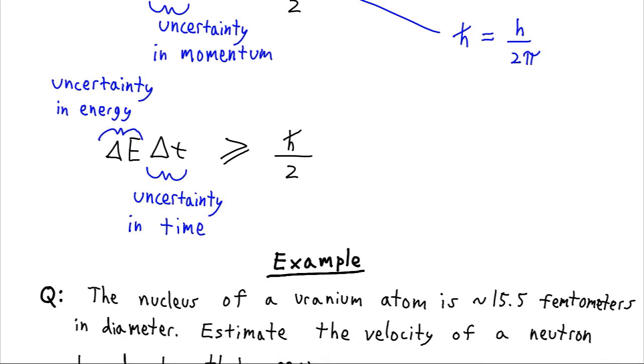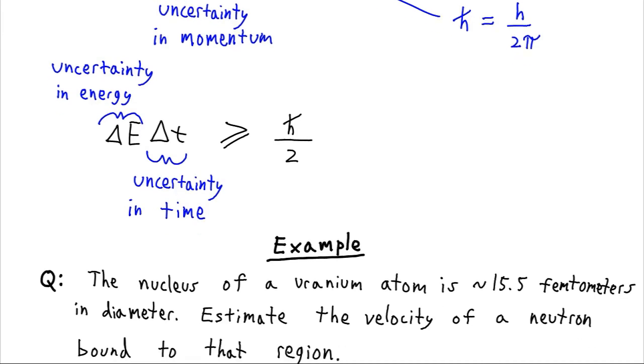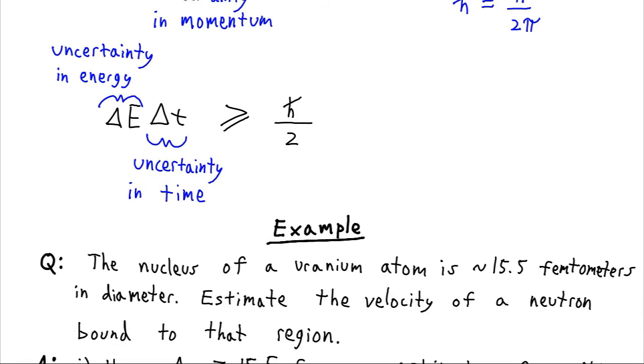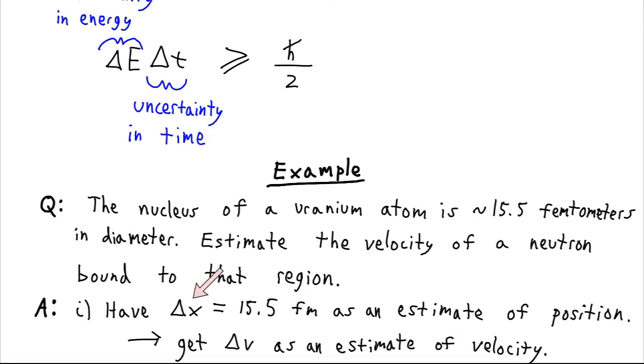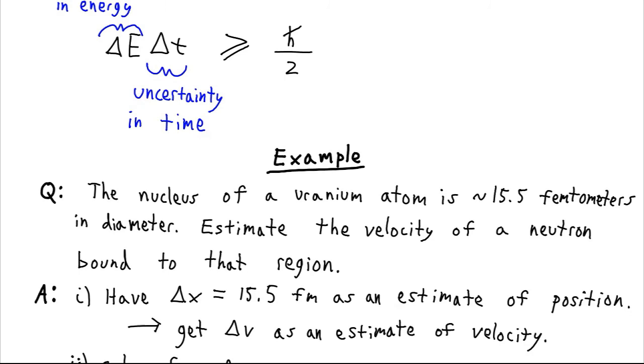So for an example, let's say we're talking about the nucleus of the uranium atom. So that's about 15 and a half femtometers in diameter. And we want to estimate the velocity of a neutron. We're going to say that neutron is bound inside a nucleus. So it can move around the nucleus, but it can't leave the nucleus. And so in that case, the uncertainty of its position is represented by the width of the nucleus. So we are going to let that be our uncertainty in x, the width of the nucleus, 15.5 femtometers. So now we can use that to get an estimate also in the variation possible value of the velocity, which is going to be our estimate of velocity.